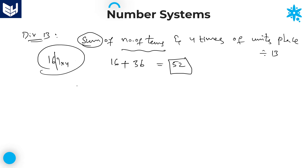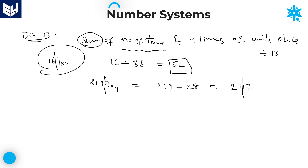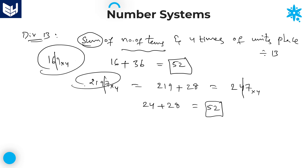One more example: 2197. Number of 10s is 219. Plus 4 times the units place: 7 times 4 equals 28. 219 plus 28 equals 247. If you don't know whether 247 is divisible by 13, apply the same process again: number of 10s is 24, plus 4 times 7 equals 28, so 24 plus 28 equals 52. 52 is divisible by 13, therefore 2197 is divisible by 13.